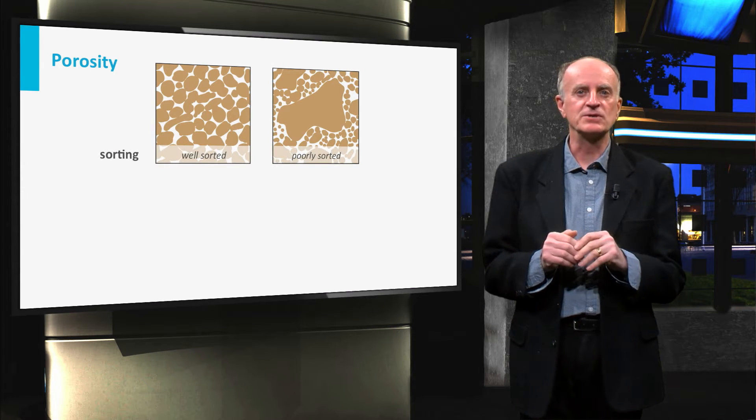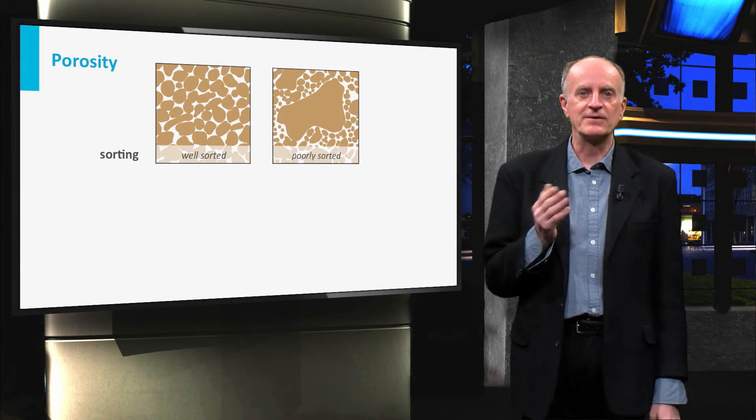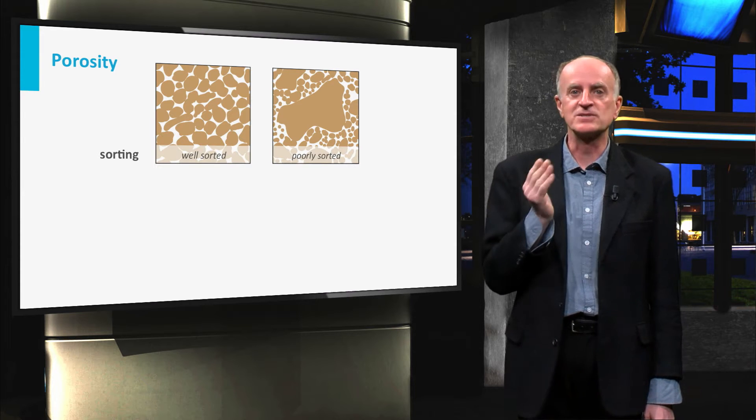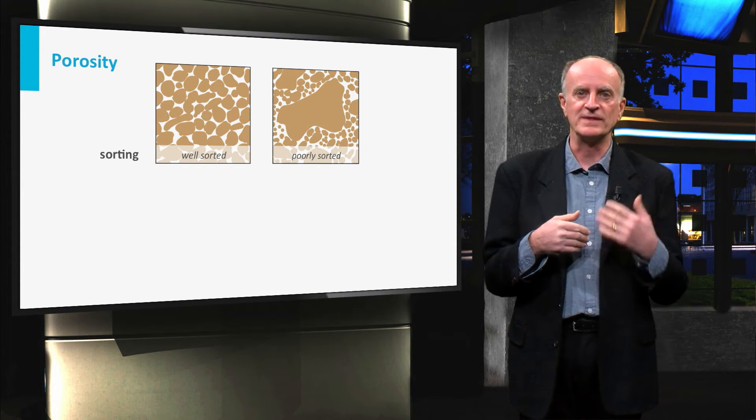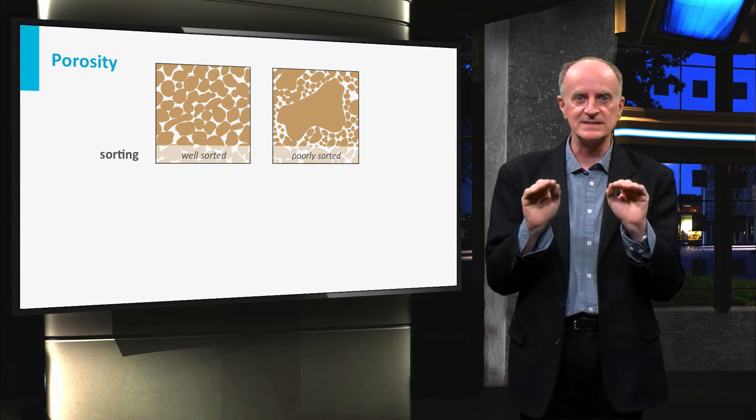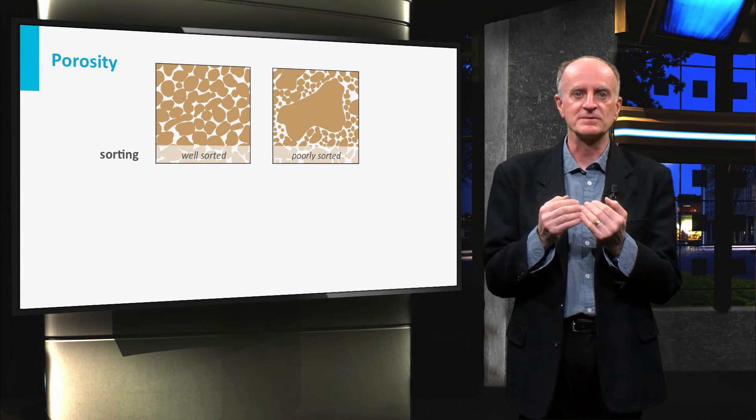Sorting is a measure of how homogeneous are the grain sizes. A well sorted rock like the one you have on the left has a dominant grain size and has high effective porosity.